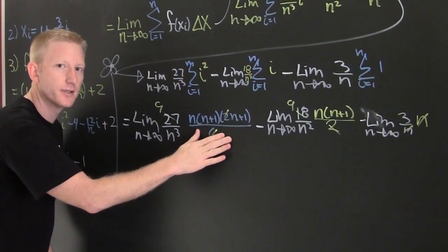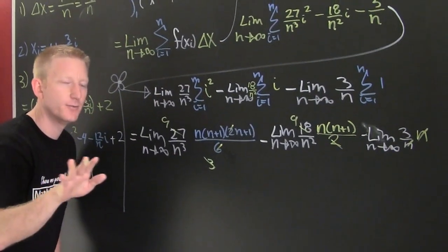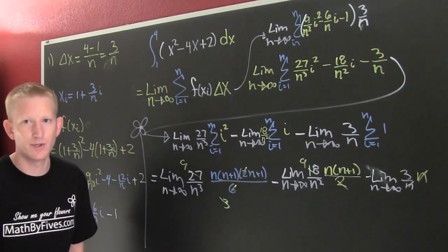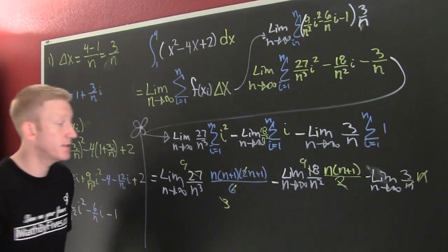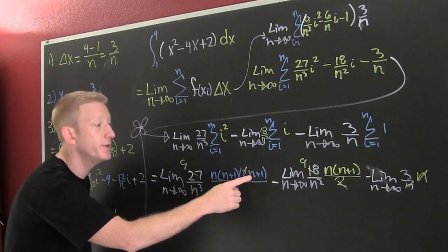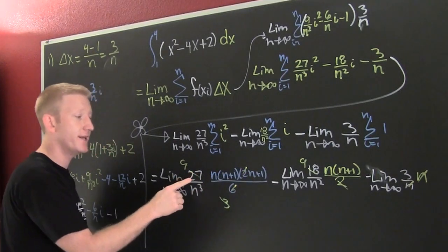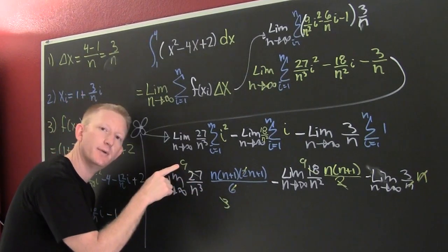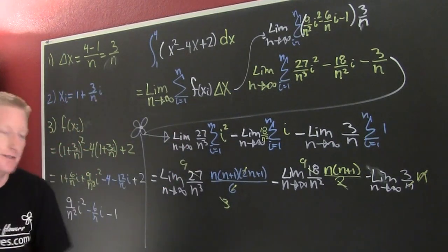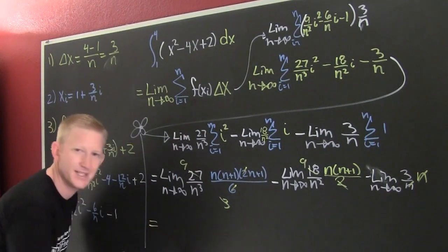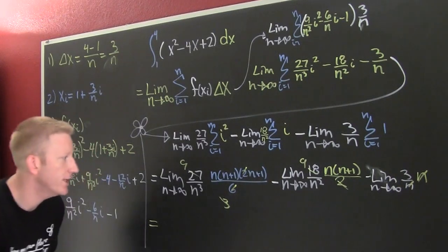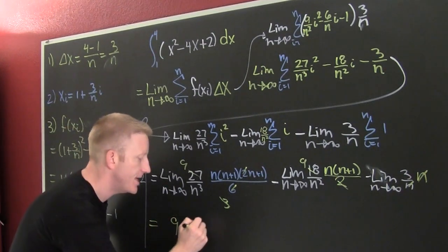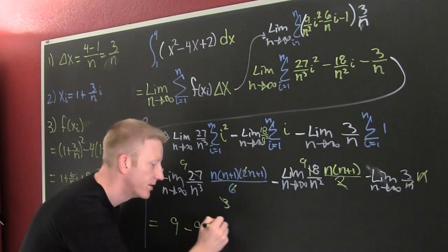Now, after running the limits — the only term that matters is the leading term — we get 2 times 27 divided by 6, which is 54/6 = 9. So the three terms simplify to 9 minus 9 minus 3, and our answer is minus 3.